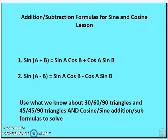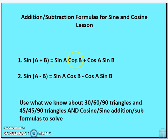Now the sum and difference formulas for sine: sine(A + B) = sine A · cosine B + cosine A · sine B, and sine(A − B) = sine A · cosine B − cosine A · sine B. Note the key difference from cosine: in the sine formulas, we mix sine and cosine values, and for the sum formula, the sign stays positive.